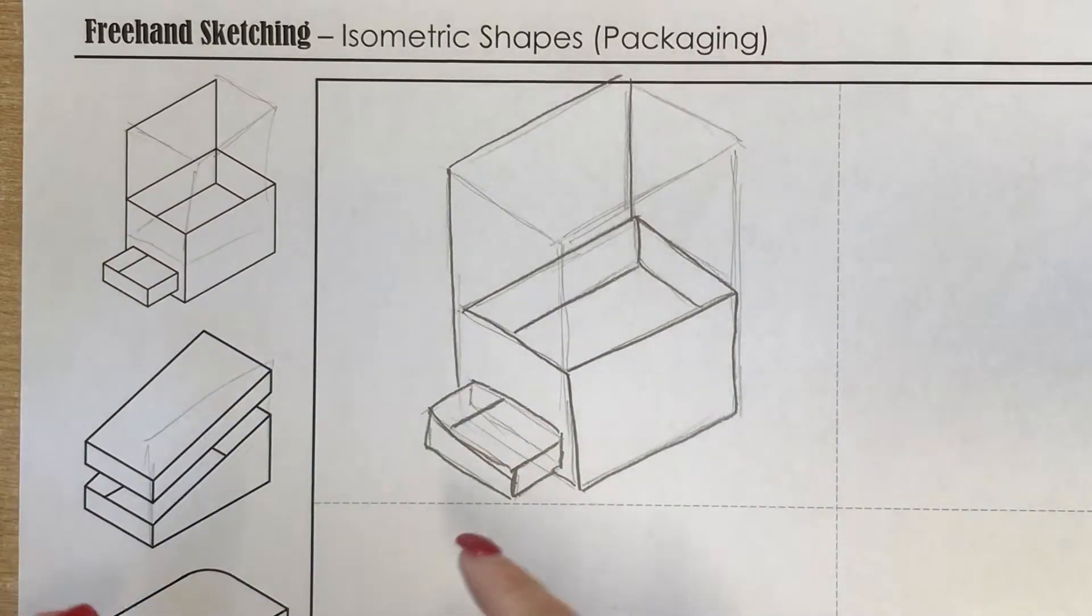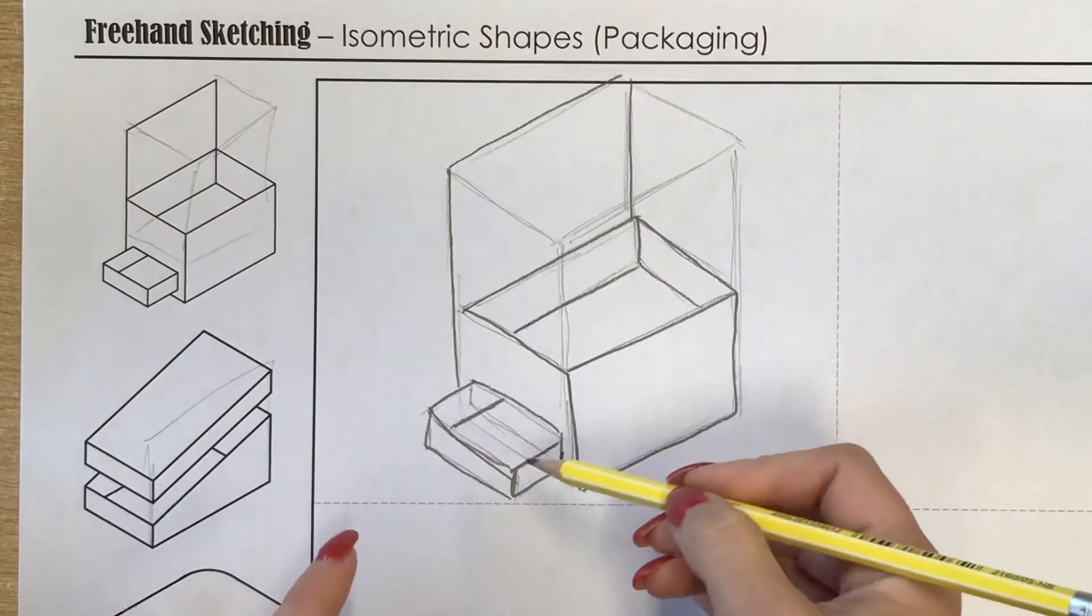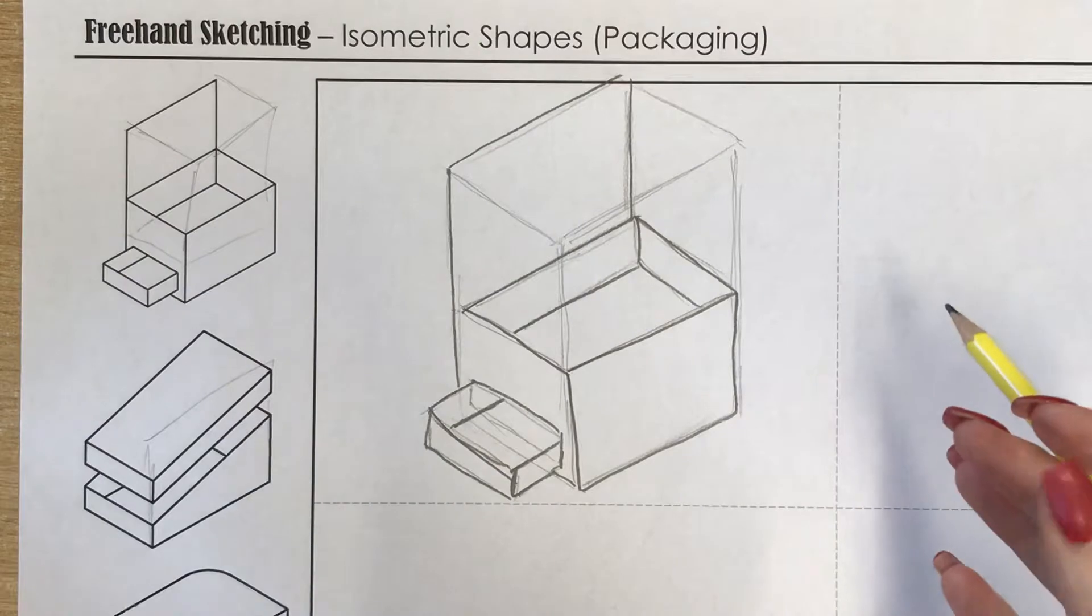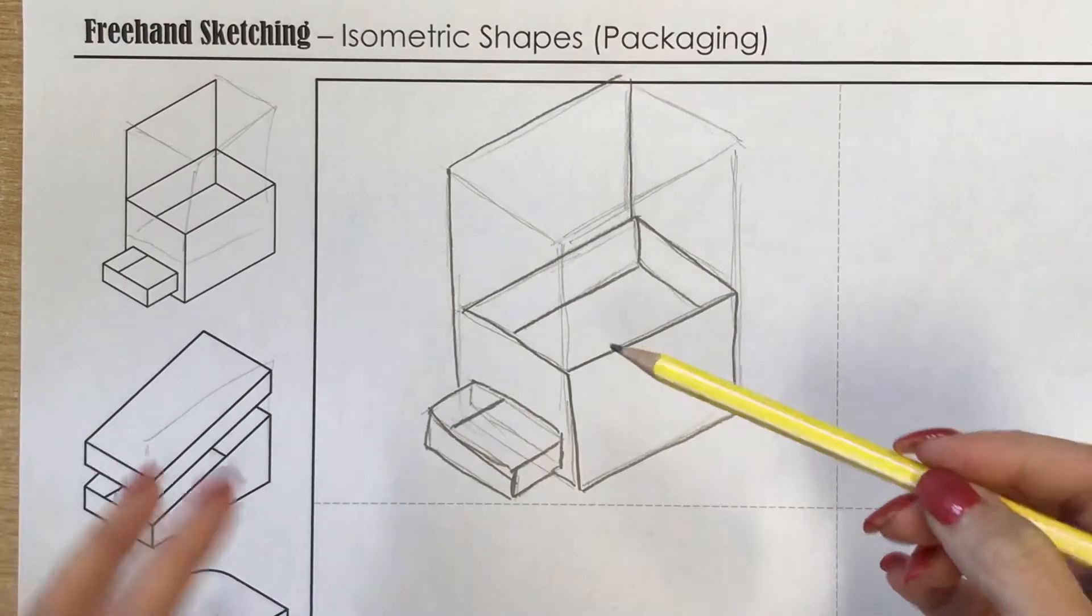And there you can see the shape. It's not perfect. Some of my lines are a little bit wonky in places, but that's the idea of freehand isometric. It's not perfect because it's not technical, but it is all parallel.